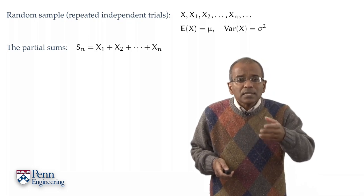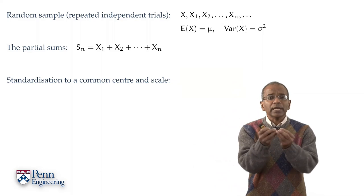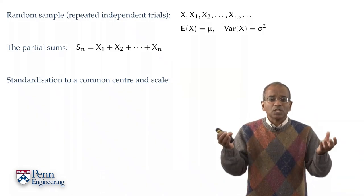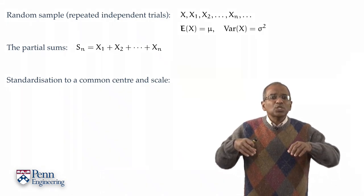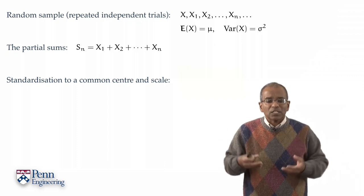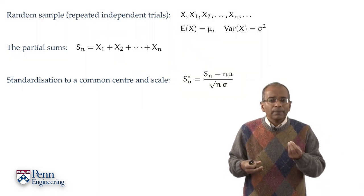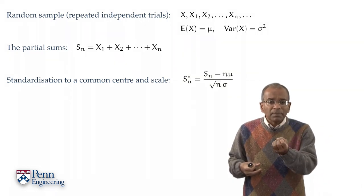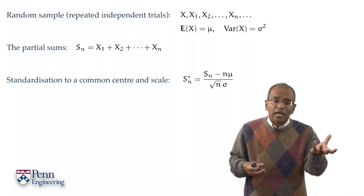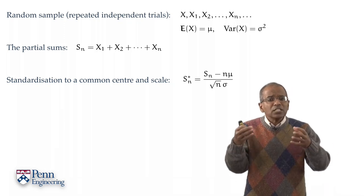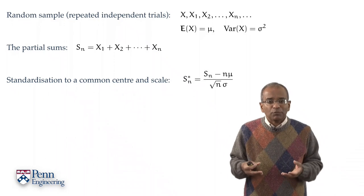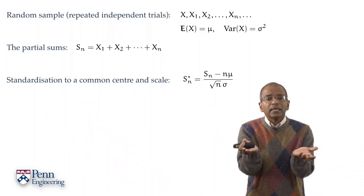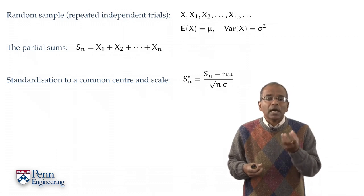A standardized version of the sum is obtained by centering it at zero and making the spread unit. This leads to a standardized or normalized variable, Sₙ*, which centers Sₙ by subtracting its expectation n times μ from it and scales it to unit, makes it dimensionless if you will, by dividing by the standard deviation of Sₙ, which is the square root of n times σ.